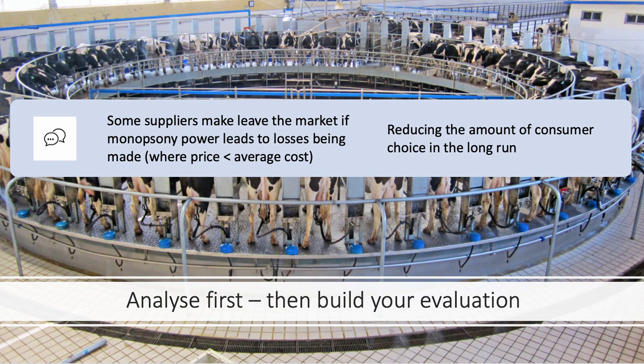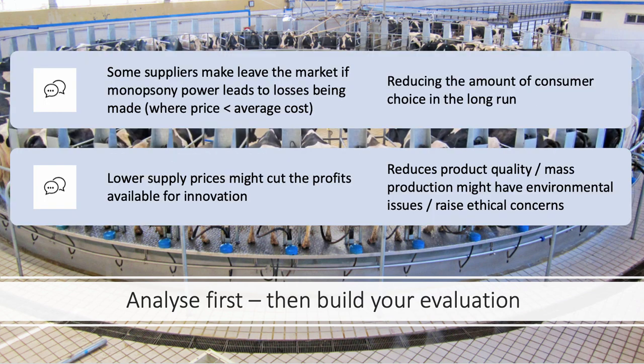The second evaluative point: if the farmer or grower is getting less for their products — a lower supply price — there's less money available for investment and innovation. That could have a negative consequence on product quality. It might cause growers to move towards an intensification of farming methods, industrialized farming, which could raise environmental concerns and ethical issues around animal safety and animal welfare.